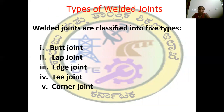Next, we are going to discuss about types of welded joints. Welded joints are classified into mainly five types: the first one is butt joint, second one is lap joint, third one is edge joint, fourth classification is T joint, and the last classification is corner joint.